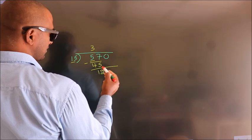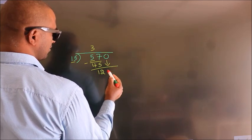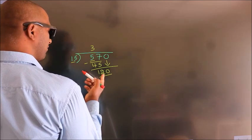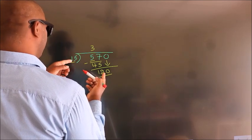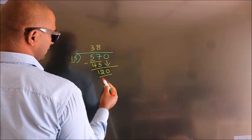After this, bring down the beside number. So 0 down, so 120. When do we get 120 in the 15 table? 15 eights, 120.